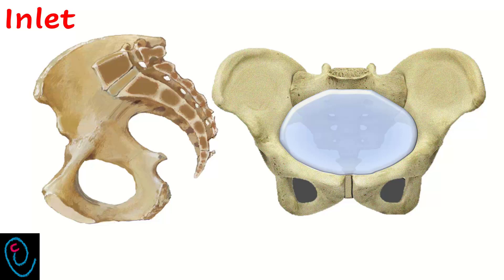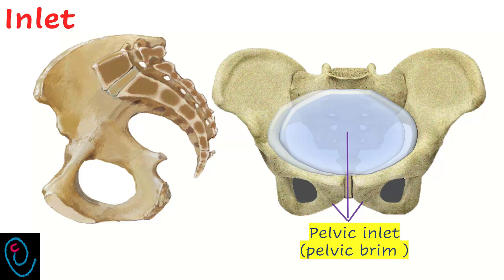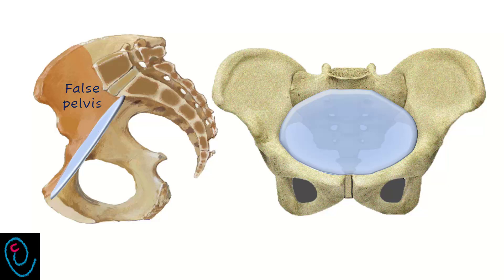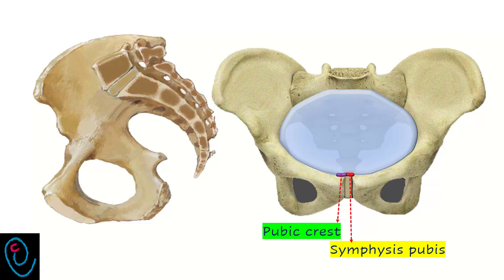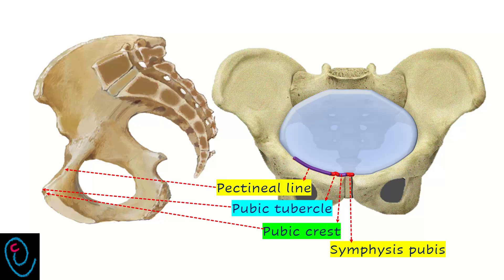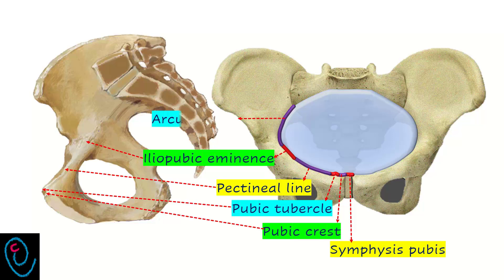The plane of the pelvic inlet is called the pelvic brim. It divides the pelvis into the false pelvis above the brim and the true pelvis below the brim. The boundaries of the pelvic inlet, starting from anterior, include the symphysis pubis, pubic crests, pubic tubercle, pectineal line, iliopubic eminence, arcuate line, anterior border of the alae of the sacrum, and the sacral promontory.